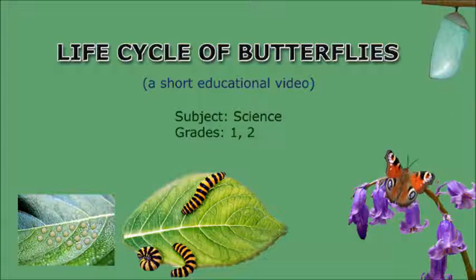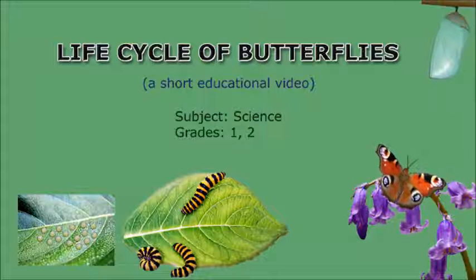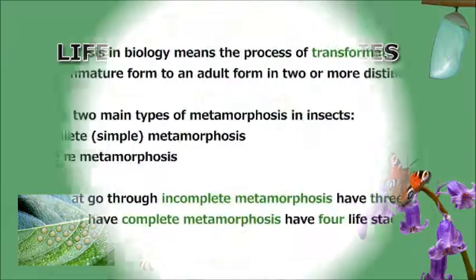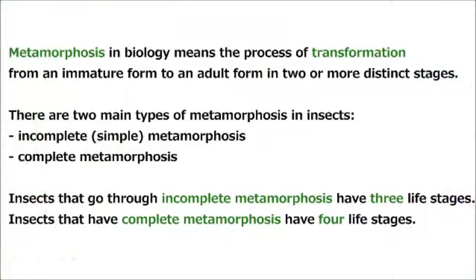Life Cycle of Butterflies. Let's start with the word metamorphosis. Metamorphosis in biology means the process of transformation from an immature form to an adult form in two or more distinct stages.